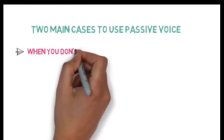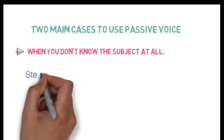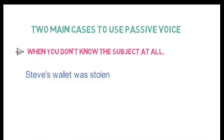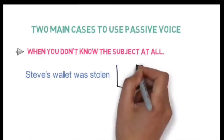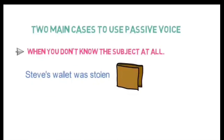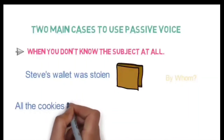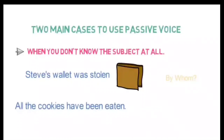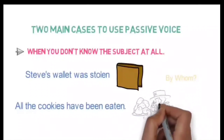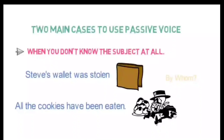There are mainly two cases where you should use passive voice. The first is when you don't know the subject at all. For example: 'Steve's wallet was stolen.' The object is the wallet which was stolen, but we don't know by whom — we don't know the subject — so we used passive voice. Another example: 'All the cookies have been eaten.' We don't know who ate the cookies, so we used passive voice.